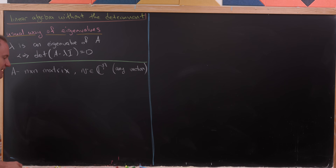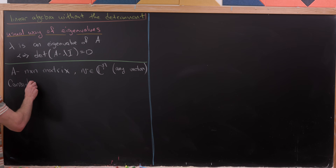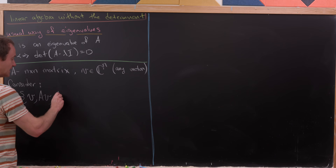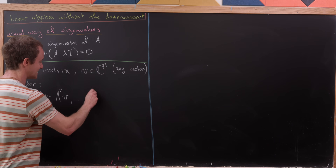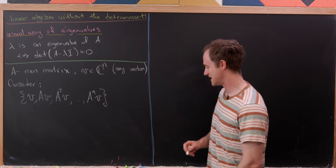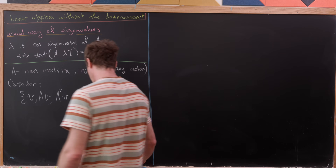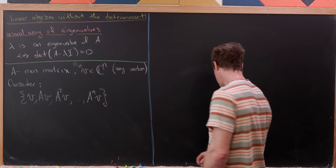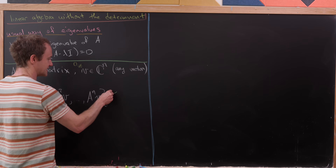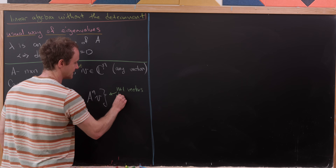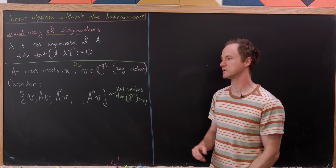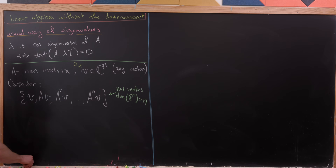We've got an n by n matrix and an n-dimensional vector. Now what we want to do is consider the following set of vectors in ℂⁿ: V, AV, A²V, all the way up to Aⁿ times V. We've got n+1 different vectors there, and V is non-zero. The dimension of ℂⁿ is n, but anytime you have more vectors than the dimension allows, you know that this set is linearly dependent.